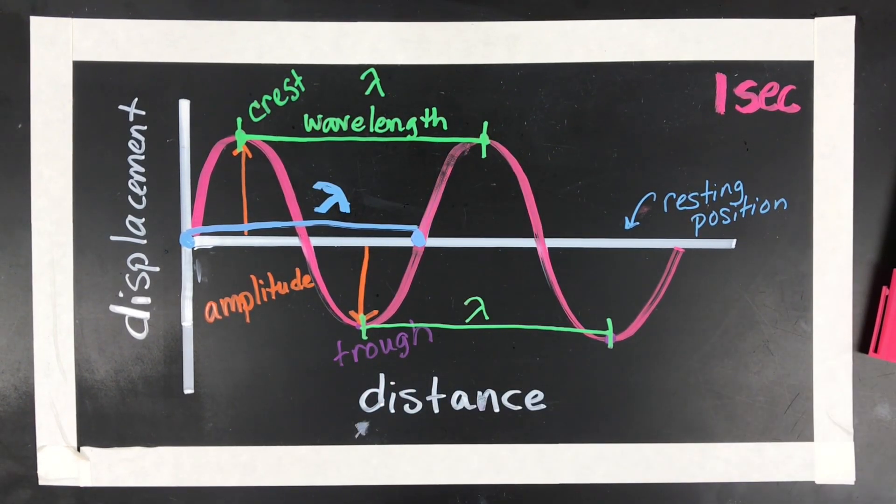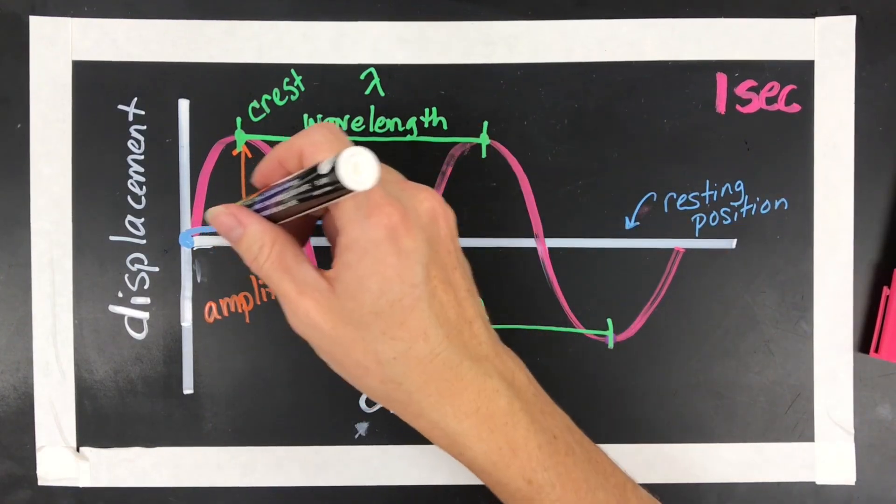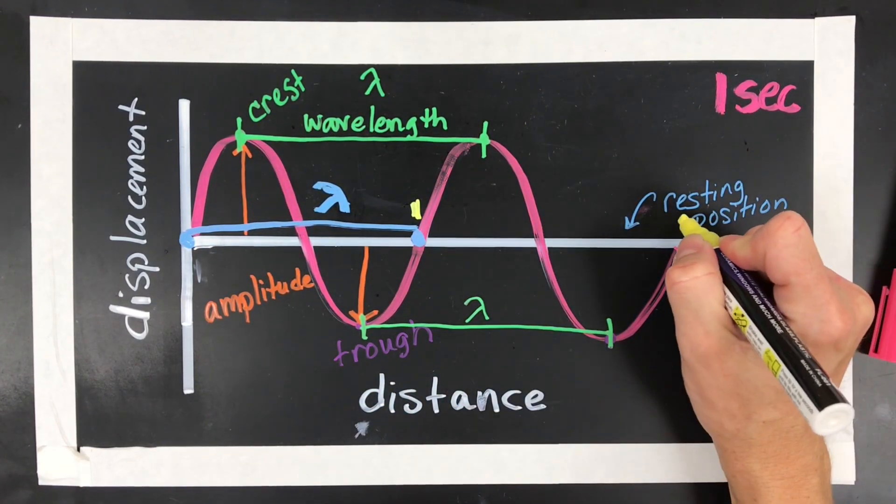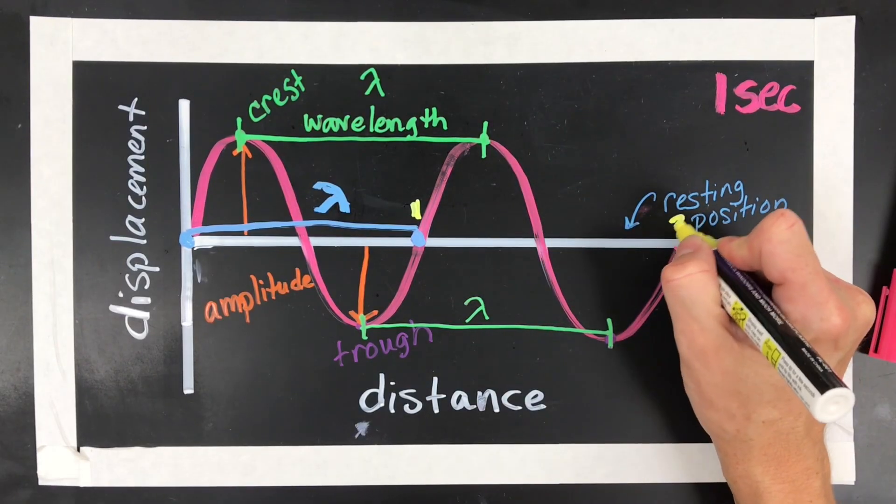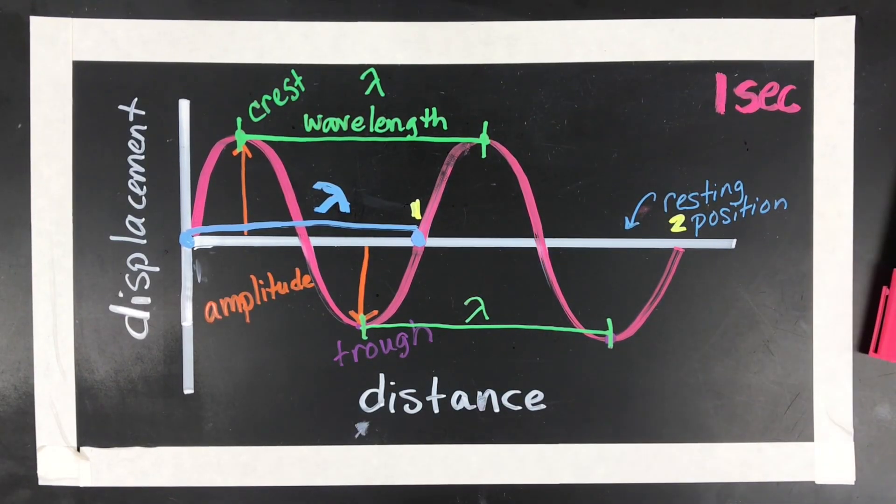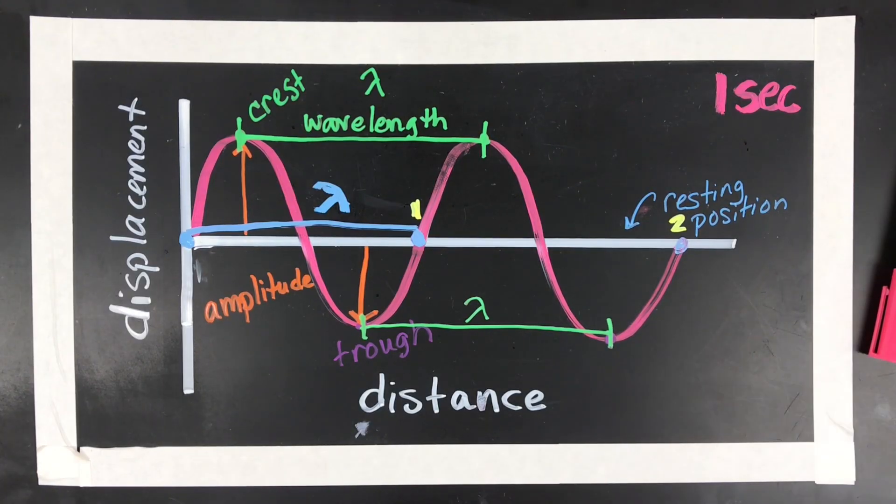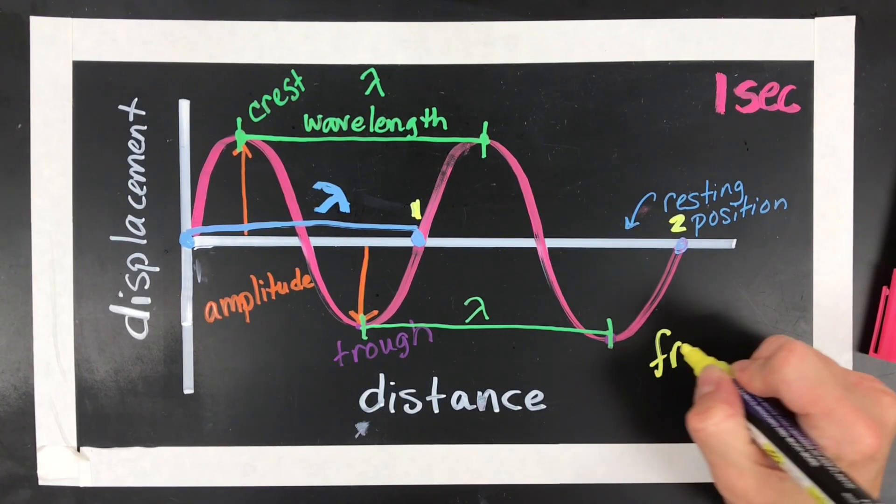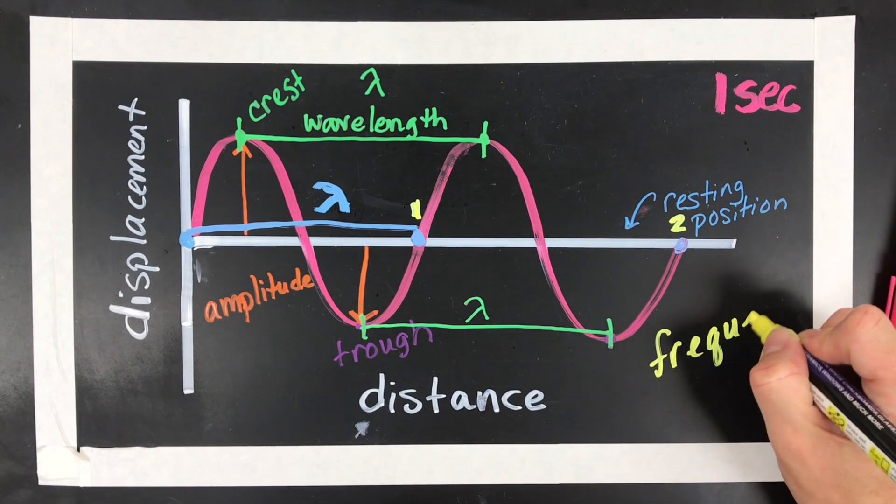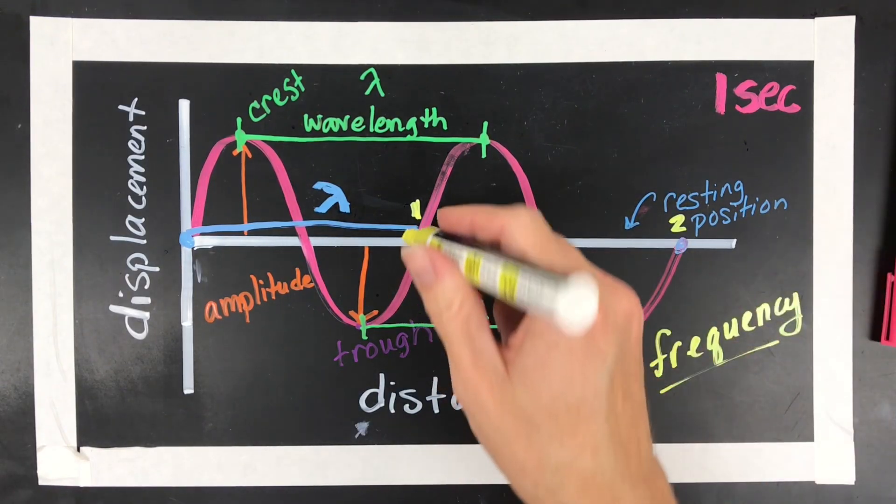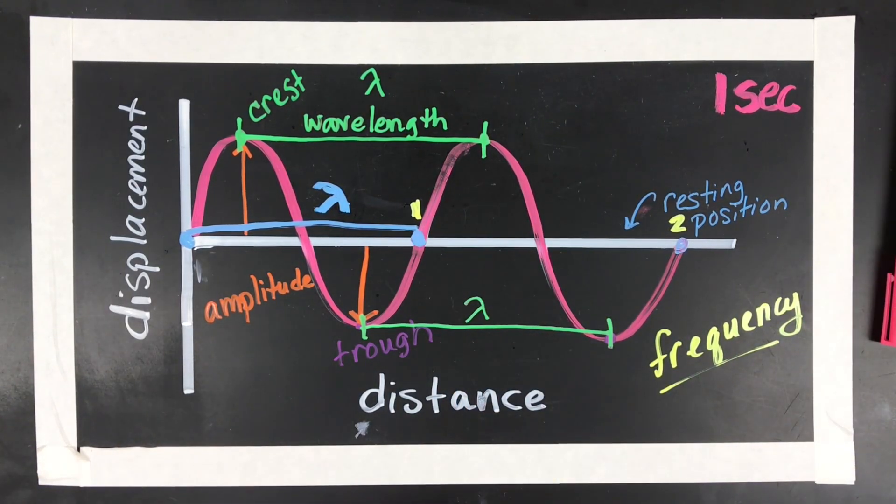So the last thing would be frequency. So frequency is the fact that I had one, and then I had this wave go up and back down to the resting point came again here. So it started, it went up and down, and then it landed there. So I have a frequency of two. So frequency is just how many cycles happen per second. So I would say I had a frequency of two in this one second of time.